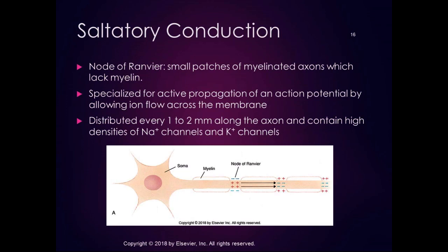Myelin is created by Schwann cells in the peripheral nervous system and oligodendrocytes in the central nervous system. We end up with small patches of myelinated axons which lack myelin — these little patches of unmyelinated axon are specialized for active propagation of an action potential by allowing ion flow across the membrane. Every one to two millimeters along the axon, there are high densities of sodium and potassium channels in those little nodes, called the nodes of Ranvier.